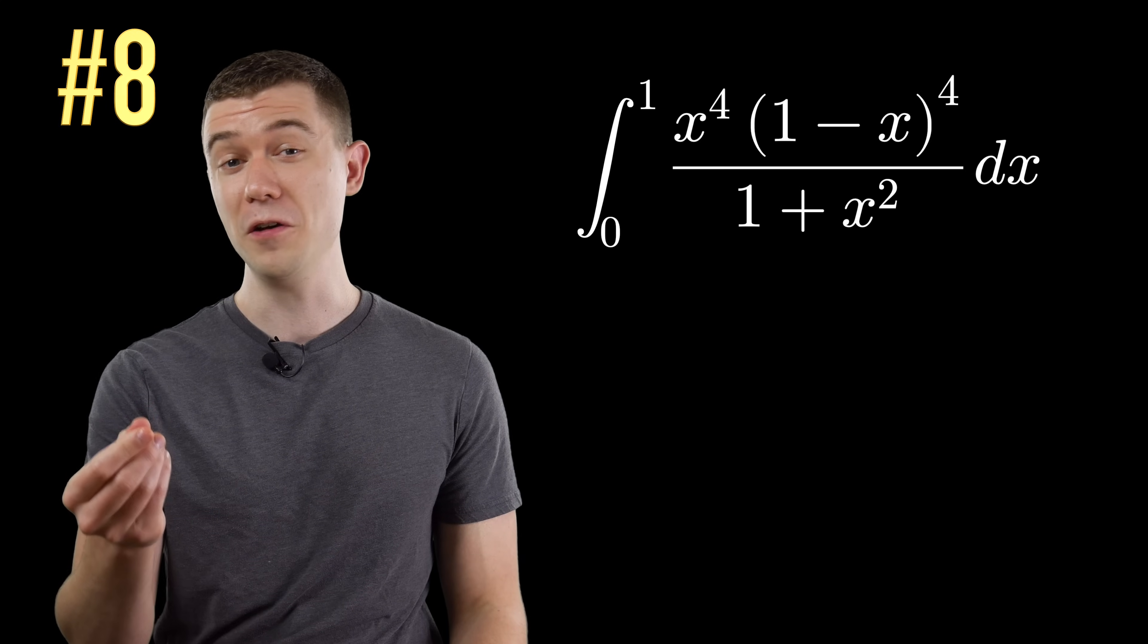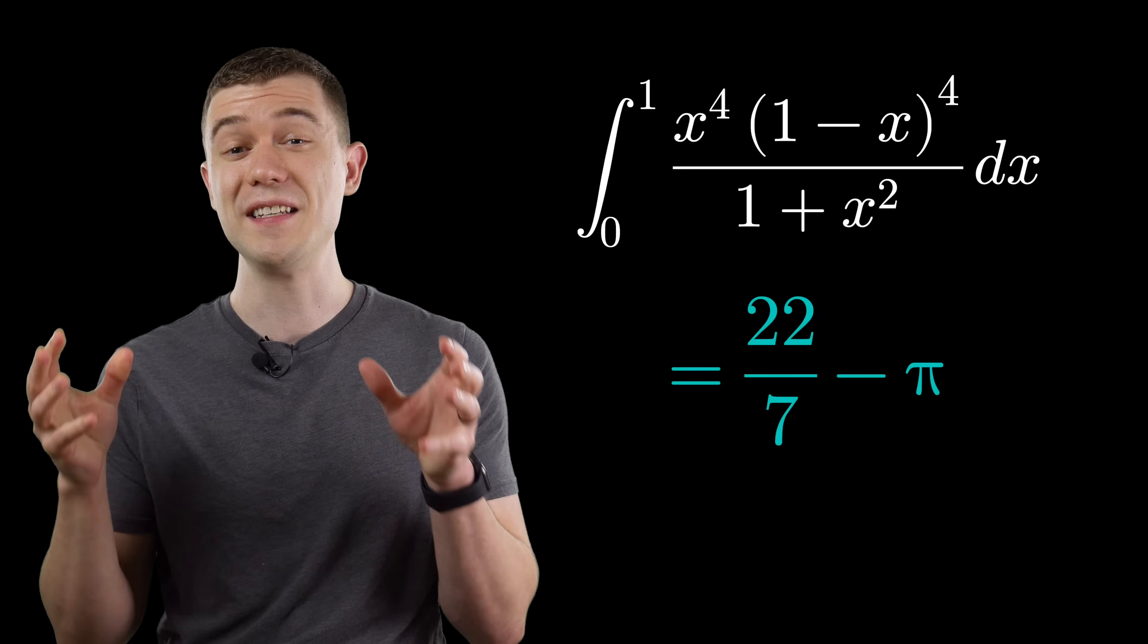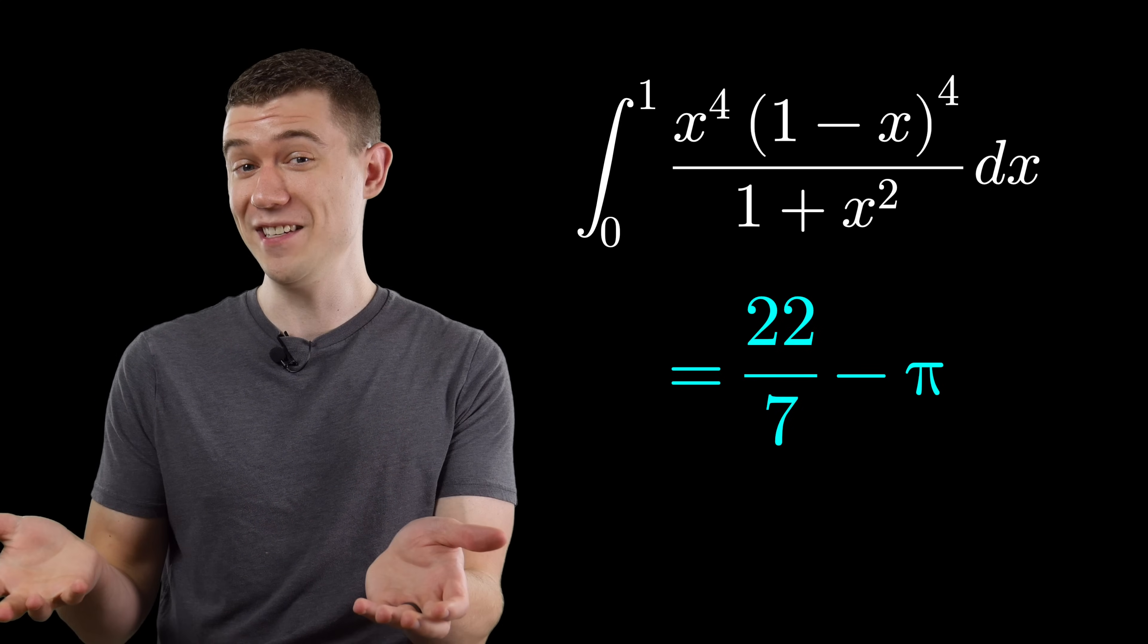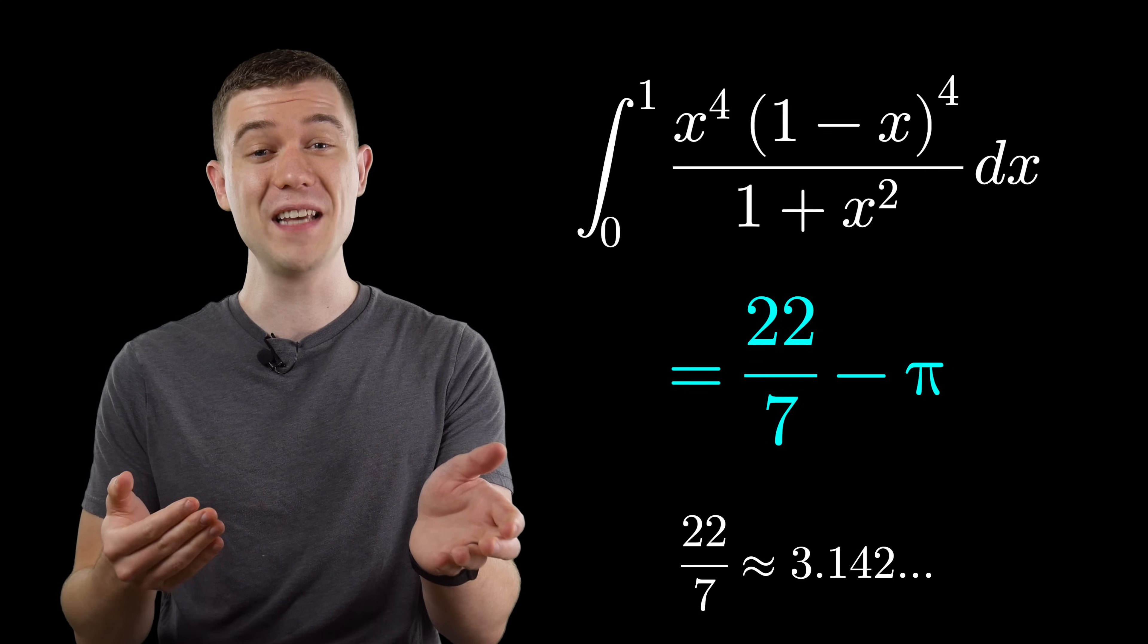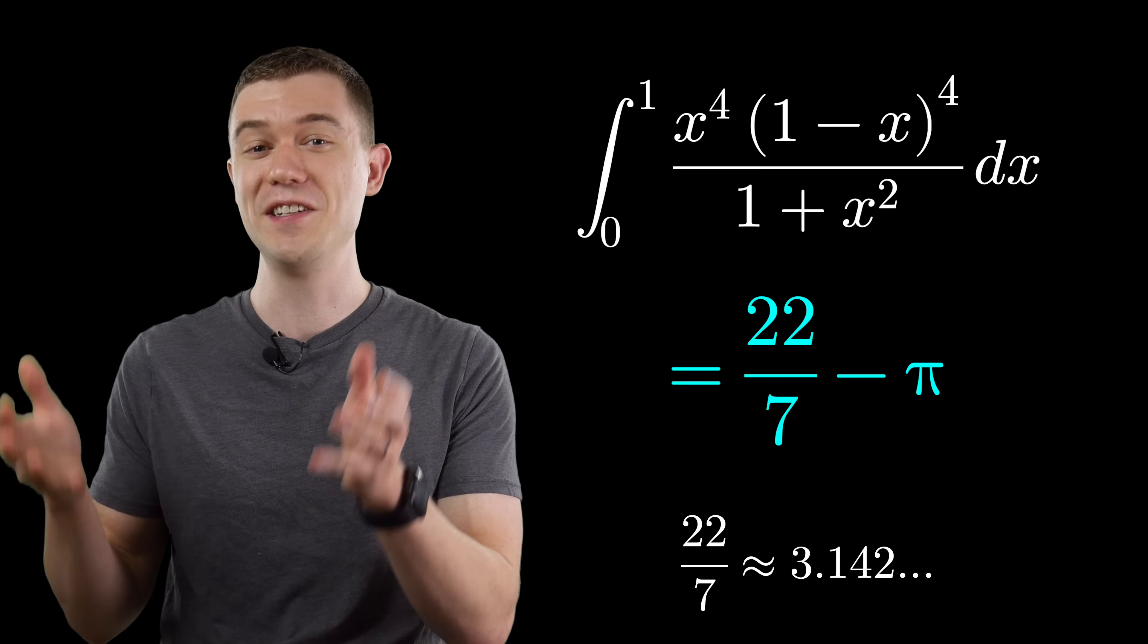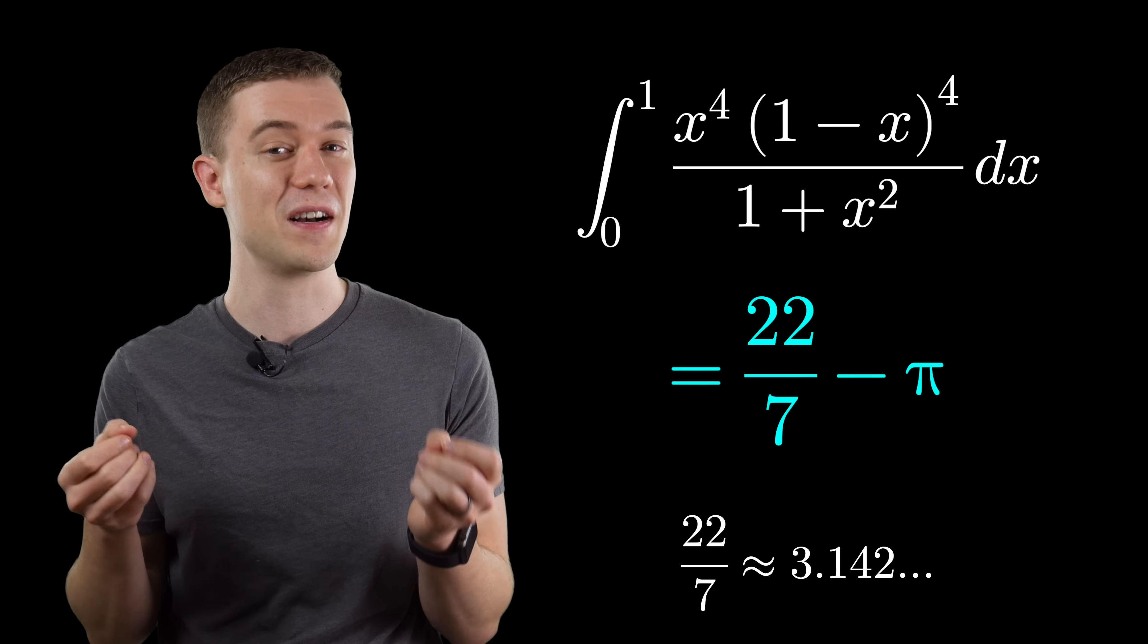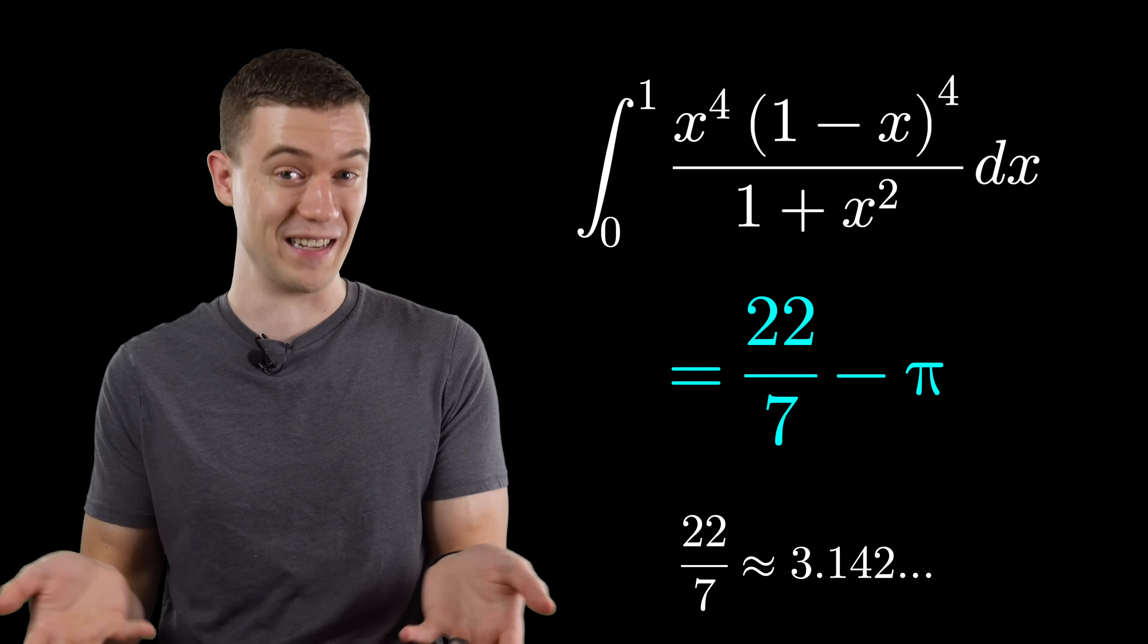Here's an integral for you. It's pretty wild what the result is, since it's 22 over 7 minus pi. Why is this incredible? Well, 22 over 7 is a great approximation for pi, so this is pretty funny that we have that great approximation and pi showing up as the answer.